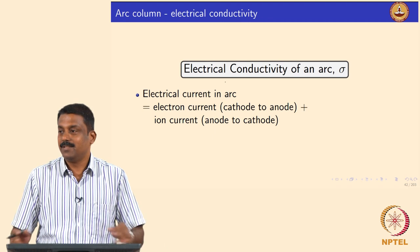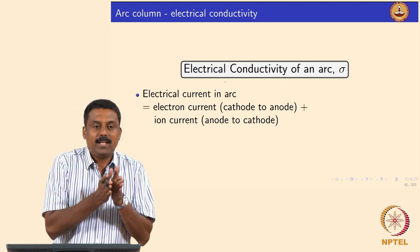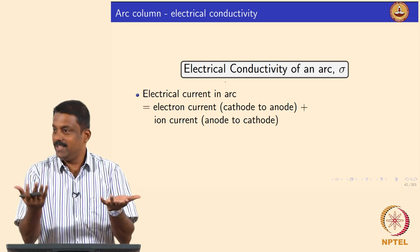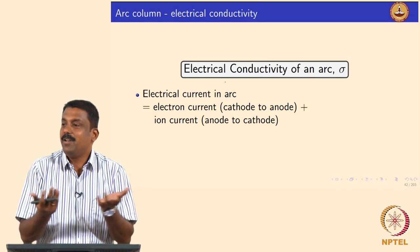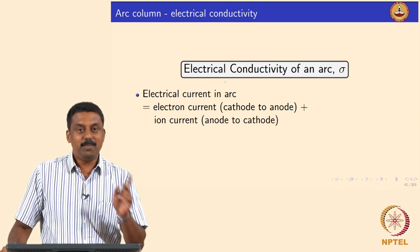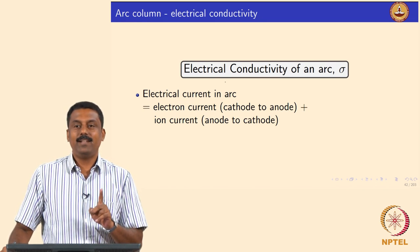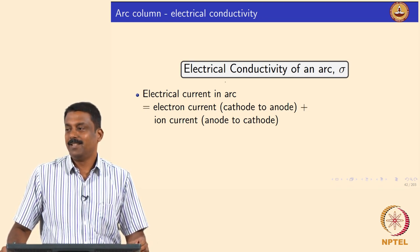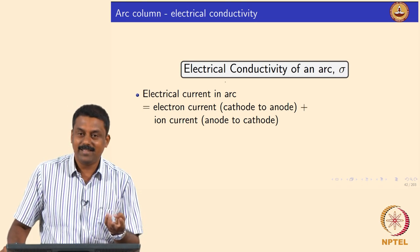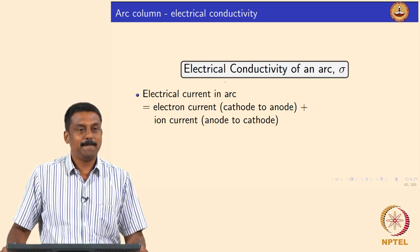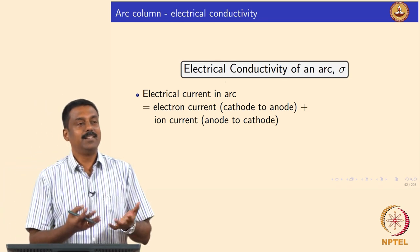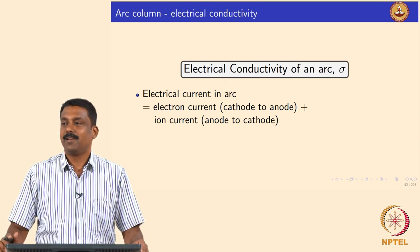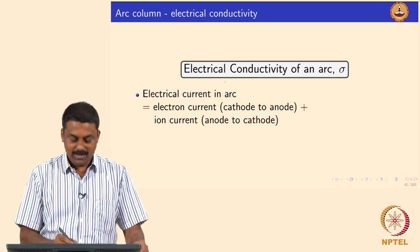The arc determines the resistance for the path of the energy carriers. More resistance means more collisions, higher energy collisions. It is possible from fundamental physics to calculate the electrical resistance of an arc. Once we know that, we can calculate the heat and balance it with conduction, convection, and radiation. I'm going to show a simple derivation of how we can calculate the electrical conductivity of an arc.